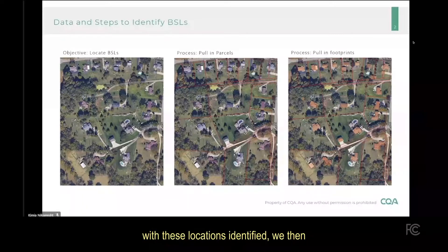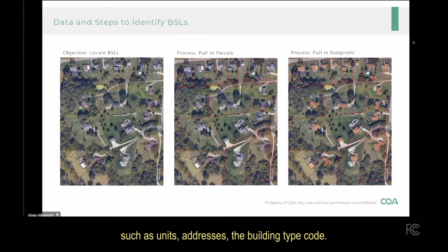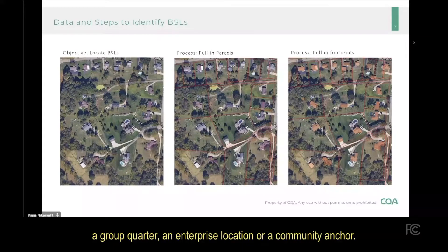With these locations identified, we then identify the key attributes associated with those BSLs, such as units, addresses, and the building type code. This building type code captures whether the location is residential, business, a group quarter, an enterprise location, or a community anchor.